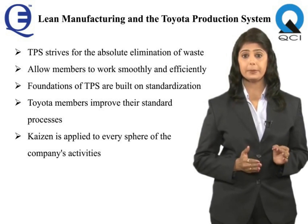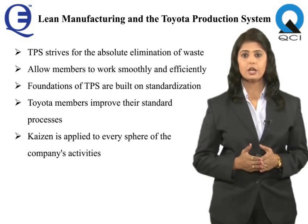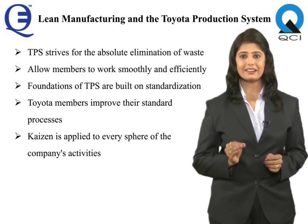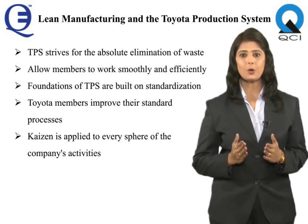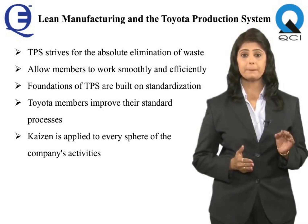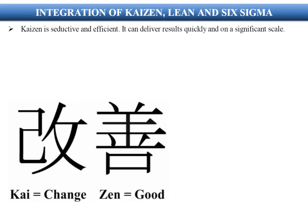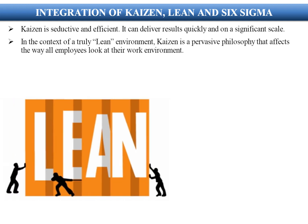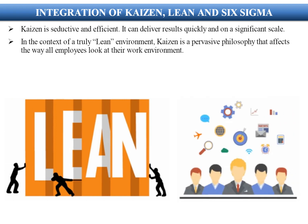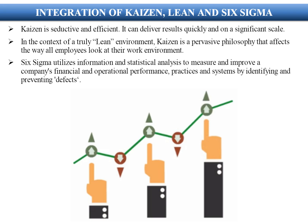The foundations of TPS are built on standardization to ensure a safe method of operation and a consistent approach to quality. Toyota members seek to continually improve their standard processes and procedures in order to ensure maximum quality, improve efficiency and eliminate waste — this is known as Kaizen and is applied to every sphere of the company's activities. Kaizen is seductive and efficient, delivering results quickly and on a significant scale. Six Sigma utilizes information and statistical analysis to measure and improve a company's financial and operational performance, practices and systems by identifying and preventing defects.